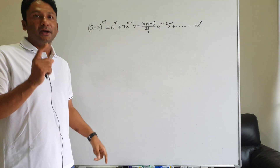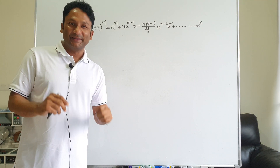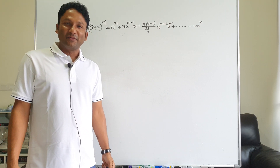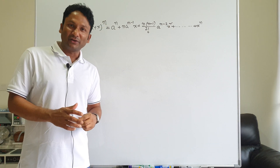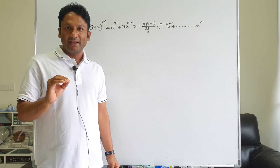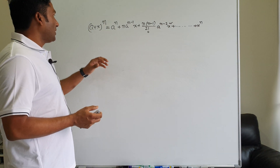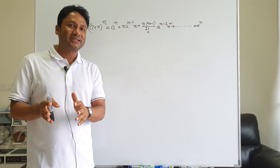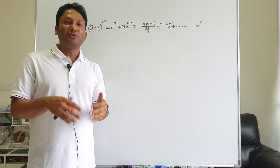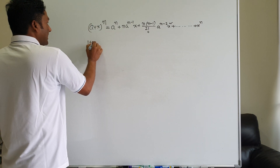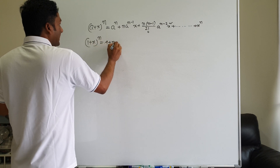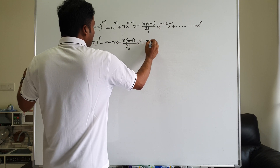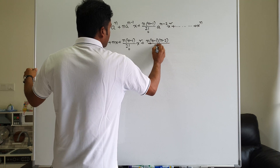The value is less than 1. For (1 + x) to the power n, we get: 1 plus nx plus n(n-1) divided by factorial 2 into x squared, plus n(n-1) into further terms.